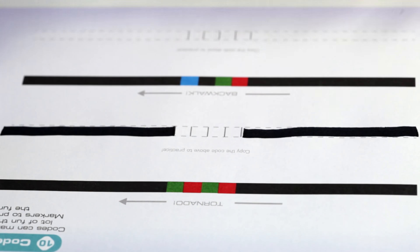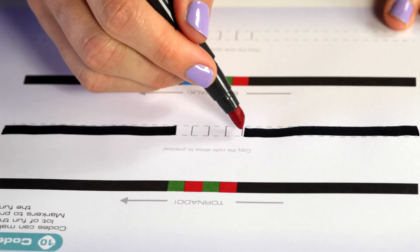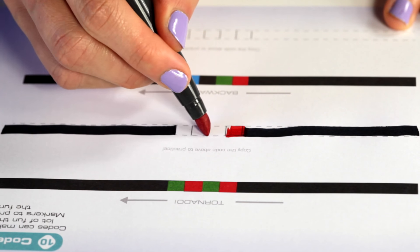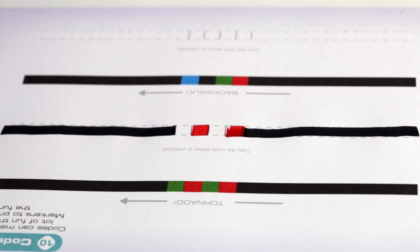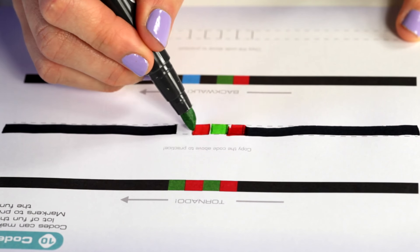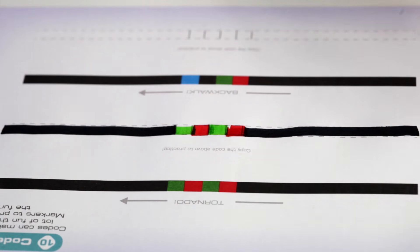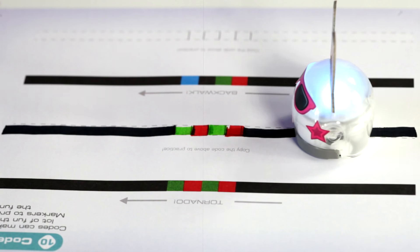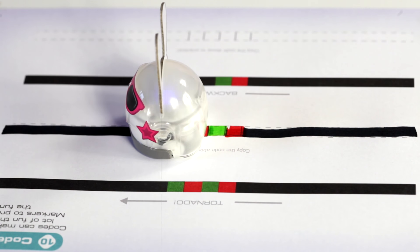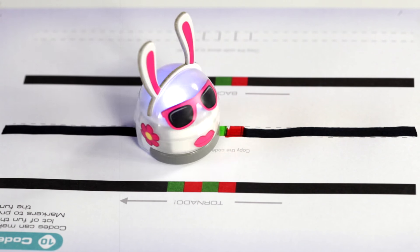This is the easiest way to learn how to code. Ozobot recognizes so many different combinations of colors, such as speed like slow, fast, or super fast. Timers and counters, such as pause, start, and stop. Then you have directions, such as go left, go right. A lot of different types of possibilities.